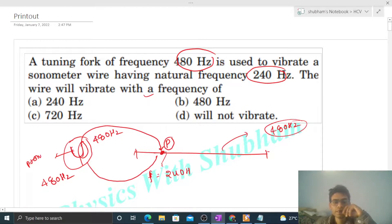This means a disturbance is generated, and the frequency of this disturbance will be the frequency of the prong of the tuning fork, which is 480 Hz. So the disturbance generated will have a frequency of 480 Hz.